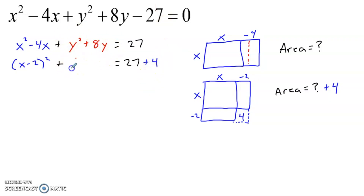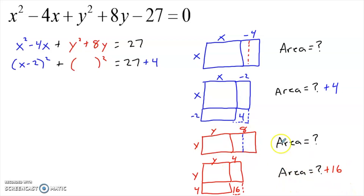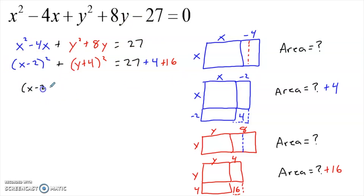Now we do the same with the y's — replacing y squared plus 8y with something squared. I draw the same picture: a y by y square and an 8y rectangle. Splitting the rectangle and bringing one half to the bottom gives almost a (y + 4) by (y + 4) square. Completing the square adds 16 to the area. So y squared plus 8y becomes (y + 4) squared, as long as I add 16 to the right side. We then clean everything up to get the equation in center-radius form.